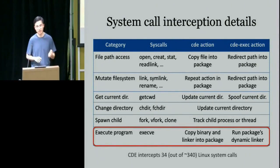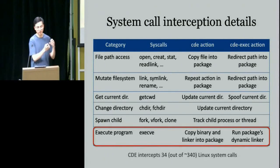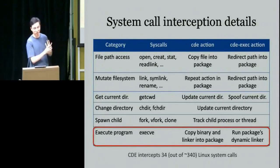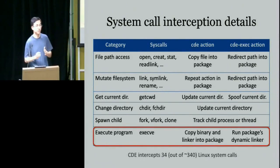When there's a system call to execute a program, CDE copies not only the binary executable into the package but also the dynamic linker. The dynamic linker is a Linux utility used to help start up many types of binaries, and the binary and dynamic linker need to have compatible versions, so both are copied into the package. On the CDE-exec side, when executing, it runs the dynamic linker from within the package on the executable rather than the system's own dynamic linker, because they may be incompatible. This is what gives about a five-year portability window — without the dynamic linker trick, you might only get a few years at most.